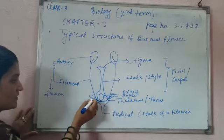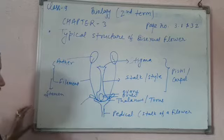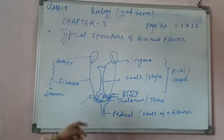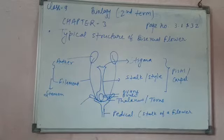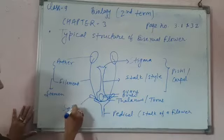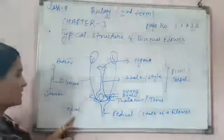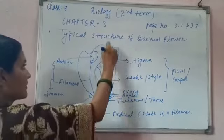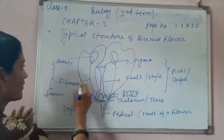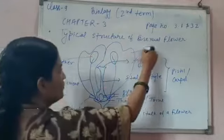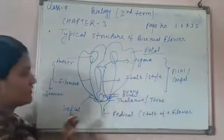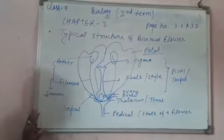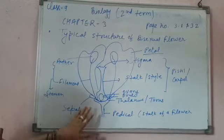The green leaf-like structure present on the base of the thalamus is known as sepal, which is usually green in color. And the next non-essential whorl is the petal — the colorful part of the flower that attracts insects for pollination. This is the structure of a bisexual flower.